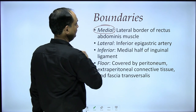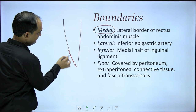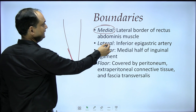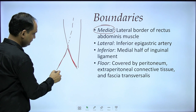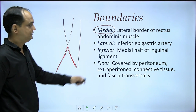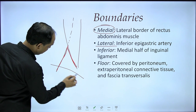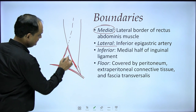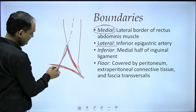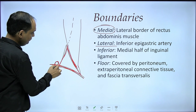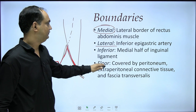To recap the boundaries: the medial boundary is the rectus abdominis muscle; the lateral boundary is formed by the inferior epigastric artery as it passes into the posterior side; and the inferior boundary is the inguinal ligament. Just lateral to the inferior epigastric artery you will find the deep inguinal ring.